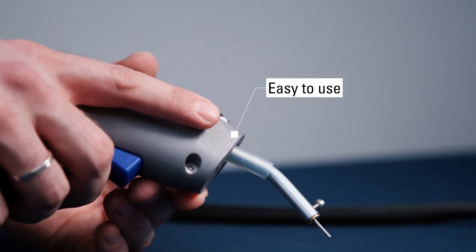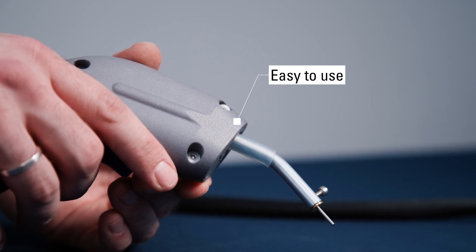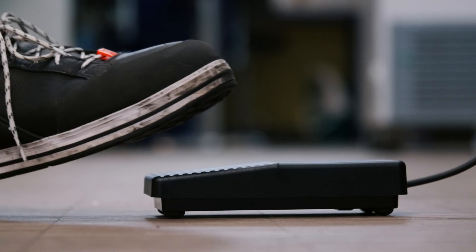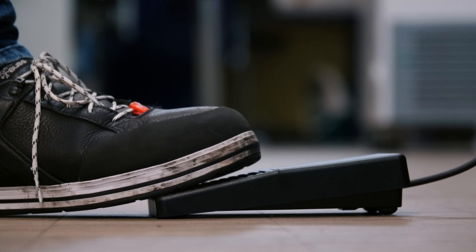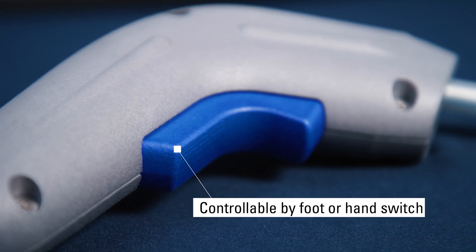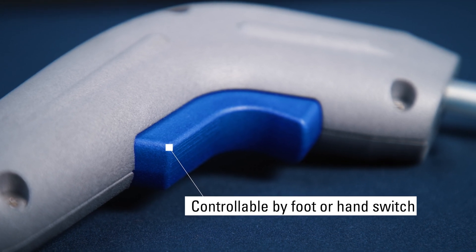There have also been further developments in the handling of Onesca ReCoat 85. On the new ergonomically shaped handpiece, there is now, in addition to the conventional foot switch, a hand switch with which the process can be controlled.